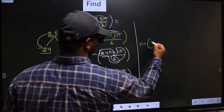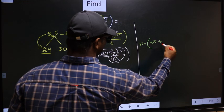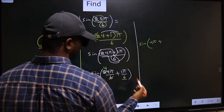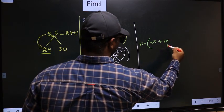So we get 4π plus this angle as it is, 1π by 6.